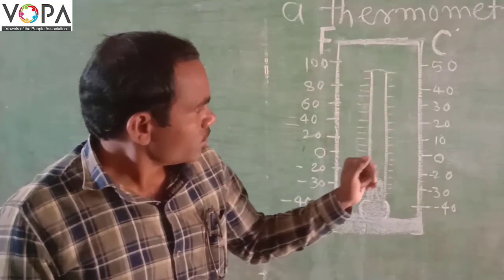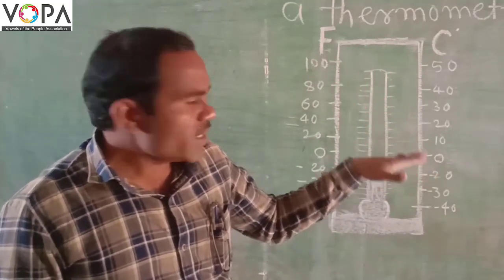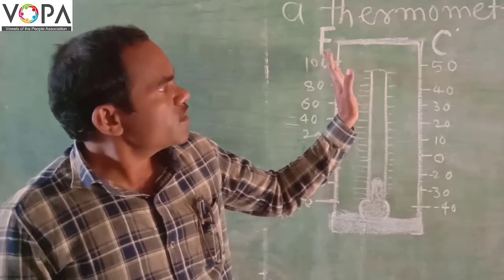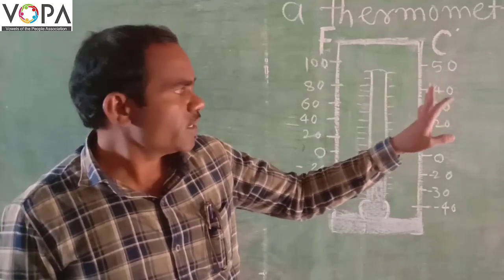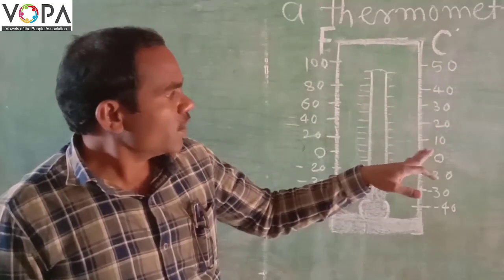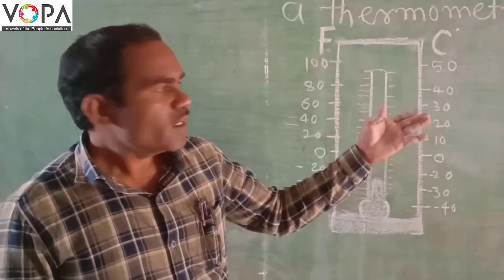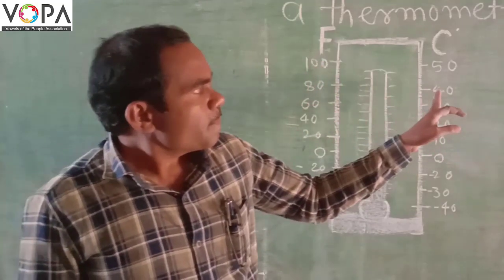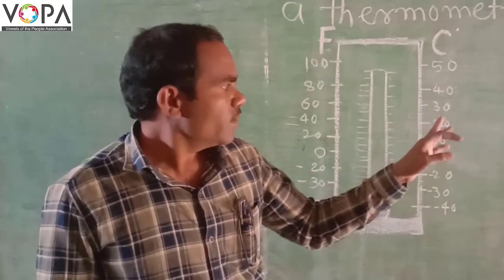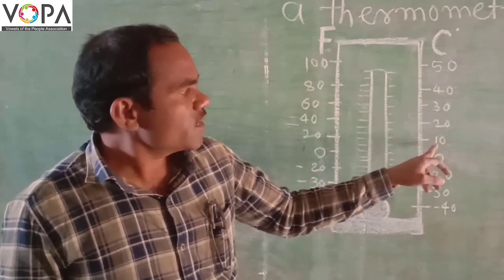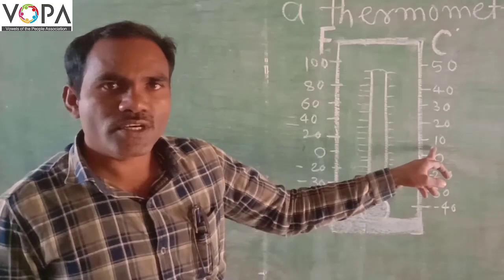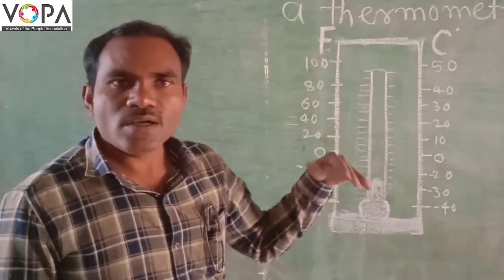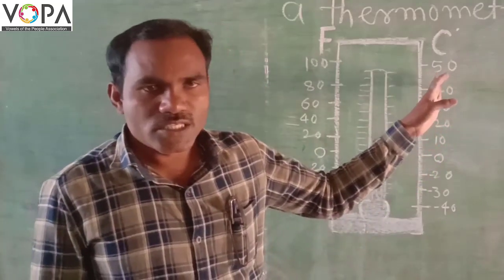Look at this. The minus temperature measuring unit is the same in Fahrenheit and Celsius, but for plus temperatures, Fahrenheit is less than Celsius. Look at this — the Celsius is 10 and the Fahrenheit is 20, which is a multiple of Celsius.